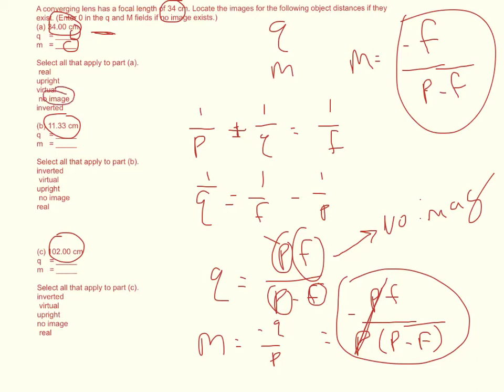And then if you try with 11.33 is the next thing, you should get Q is equal to negative 16.9 and M is positive 1.49. So almost 17 and almost 1.5.